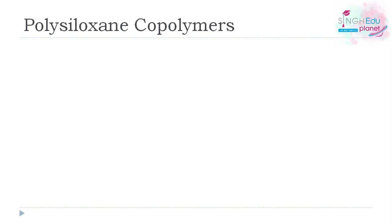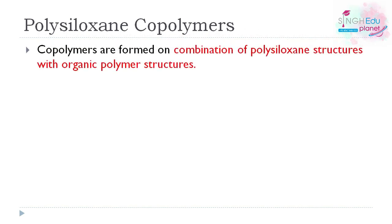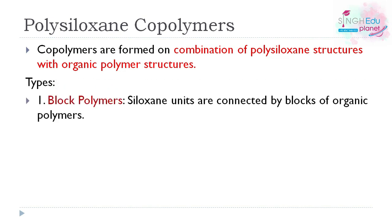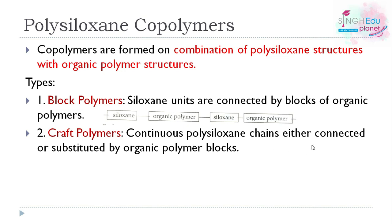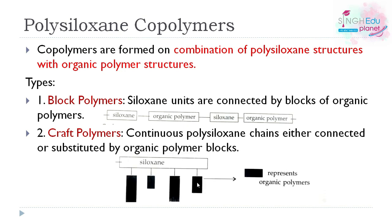The last topic is polysiloxane copolymers, formed by combining polysiloxane with organic polymers. There are two types: block polymers, where siloxane units are connected by blocks of organic polymers alternately; and graft polymers, where a continuous polysiloxane chain has organic polymer blocks either connected to or substituted on it.